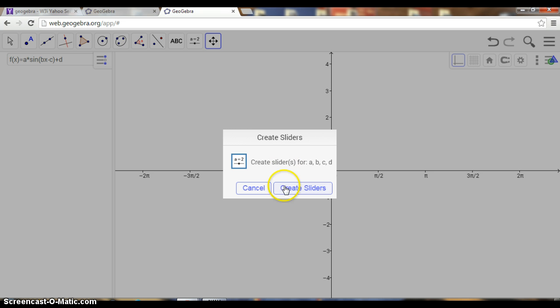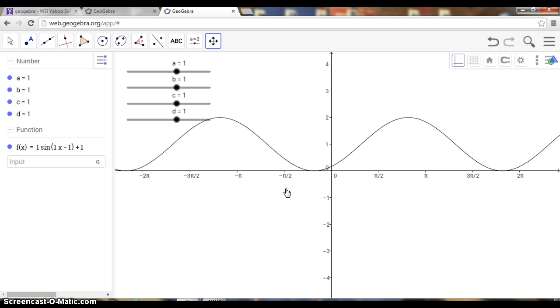If I hit enter, it'll ask me to create sliders. These are the sliders, and when I change these, I just have to slide them to change the values of a, b, c, and d. And that's what we want to look at.